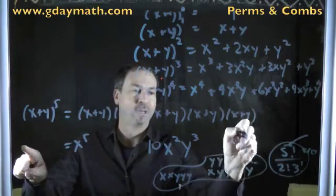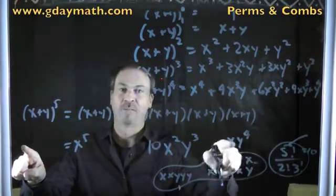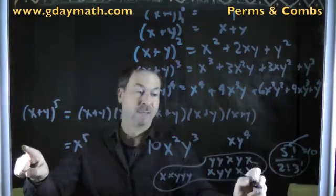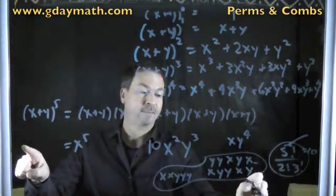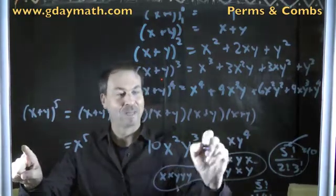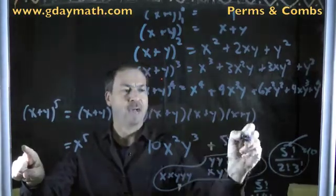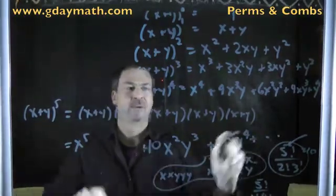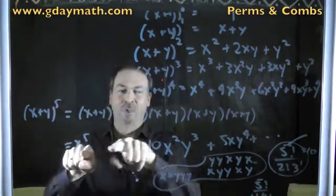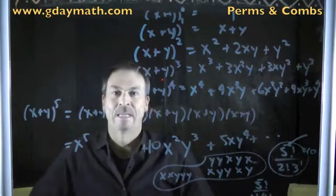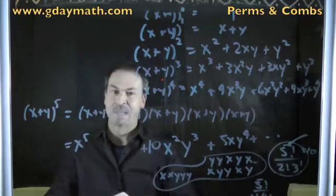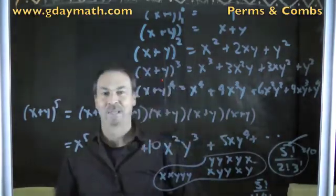In fact, there are going to be some x y to the 4th terms as well. How many ways to arrange one x and four y's? That's going to be 5 factorial over 1 factorial times 4 factorial — again, the next entry on Pascal's Triangle — so 5 of them. I can go through and argue that yes, indeed, as I expand x plus y to the 5th power, the coefficients I'm going to get are indeed the 5th row entries of Pascal's Triangle. Or expanding x plus y to the nth power, I will get the nth row entries of Pascal's Triangle.